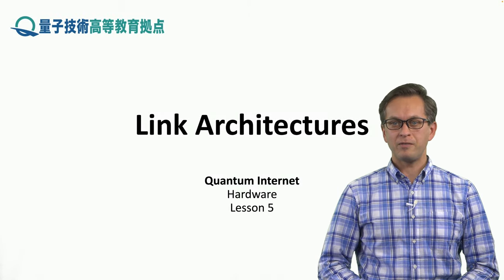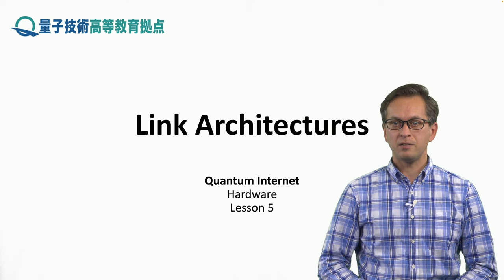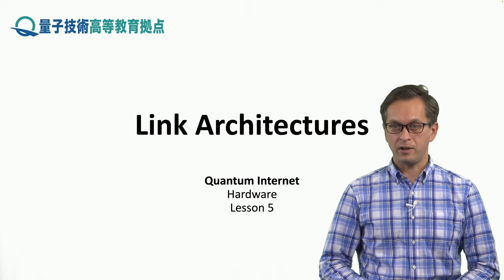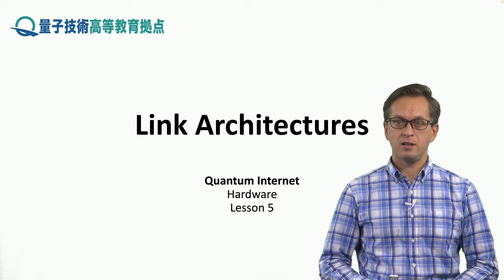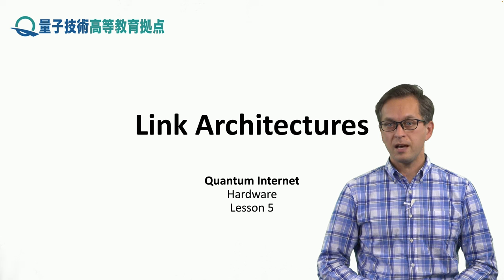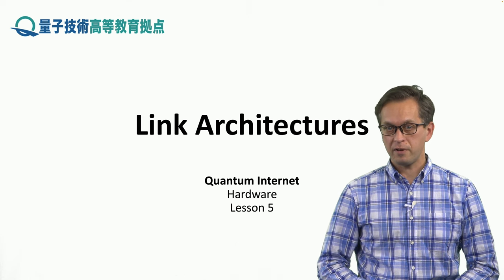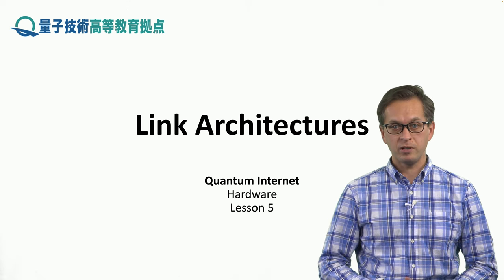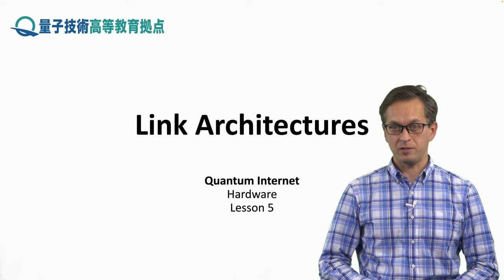Hi, and welcome to lesson 5 on link architectures. This whole lesson will be dedicated to establishing link-level entanglement, and we're going to consider five different architectures. The first three will include both stationary qubits in the form of quantum memories and flying qubits in the form of photons. The fourth architecture will rely only on flying qubits with no memories, while the fifth will rely only on quantum memories — stationary qubits without any flying qubits.